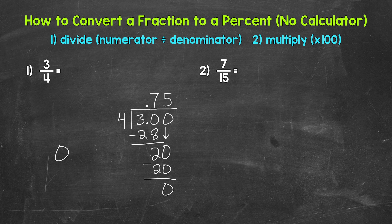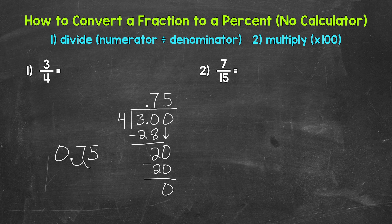I'm going to come to the side here and rewrite our decimal, starting with a zero and then a decimal point. This is typical when writing decimals because it helps us recognize and see the decimal. So 0.75 — three fourths in decimal form is 0.75. Let's multiply it by 100 to convert it to a percent. Move the decimal twice to the right — once, twice. This gives us 75%. So three fourths equals 75%.